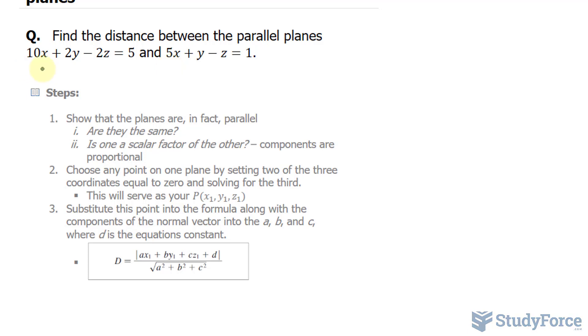So taking the coefficients of x, y, and z, we can write our normal vector as 10, 2, and negative 2. These are the components. And the normal vector here is 5, 1, and negative 1.